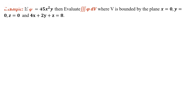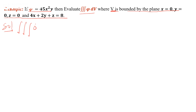In the next example, we have a scalar function phi and we must evaluate the triple integral of phi dV, where V is the region bounded by the planes x=0, y=0, z=0, and the plane 4x + 2y + z = 8. We write the z-limit: z varies from 0 to 8 - 4x - 2y.